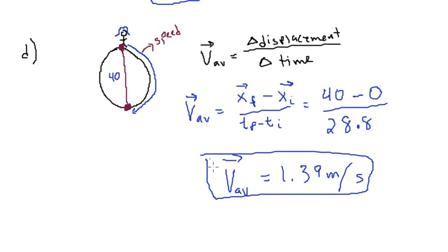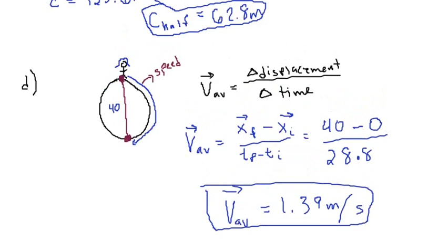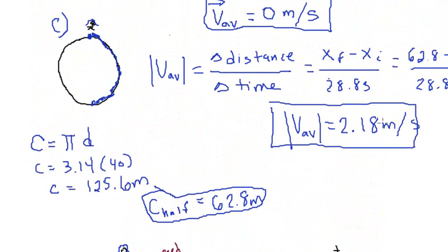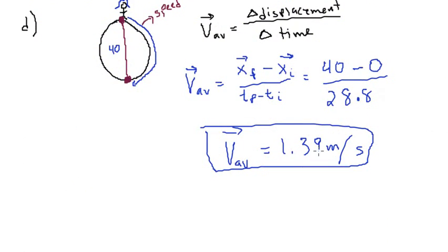Okay. Notice that the average velocity is different from the average speed which we found in this problem. Okay, so for part C, the average speed was 2.18 meters per second. And for part D, the average speed is 1.39 meters per second. So I hope these videos helped you figure out the difference between the average velocity and the average speed.